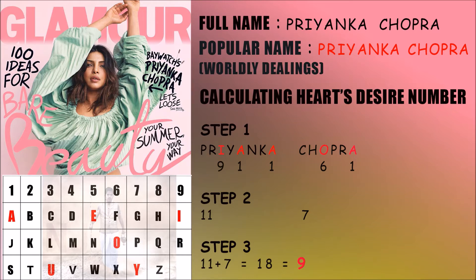Adding those gives 11, which being a master number we keep intact and do not reduce further. The surname Chopra has two vowels — O and A — with values of 6 and 1, giving a sum of 7. In Step 3, we add these two results: 11 plus 7 equals 18, which reduces to 9. So Priyanka Chopra has her Heart's Desire Number as 9.